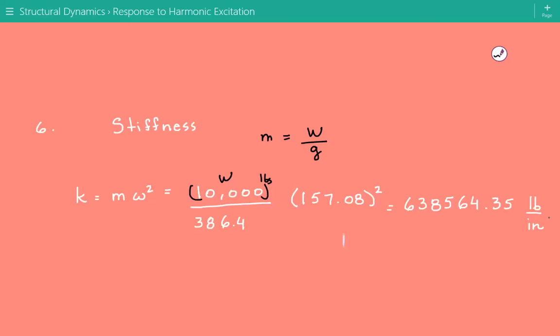And then our circular natural frequency of the system is equal to 157.08 squared. So our stiffness is equal to 638,564.35 pounds per inch.